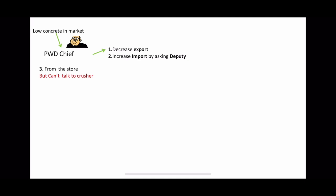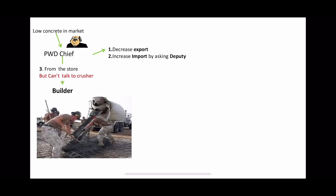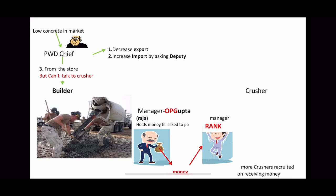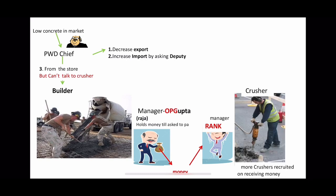The chief tells the builder to take down part of the road so that concrete can be released. The builder tells his manager, Mr. Opie Gupta, who manages the finance. Opie Gupta holds the money until it is necessary and he gets an order. He then gives money to the manager of the crusher — the poor one, called 'rank' in Hindi. As he gets the money, he recruits more crushers and the crushing process starts. This mobilizes not just the concrete but also the rods and cement mixture. The chief cannot talk directly to the crusher — he must go through the builder, Opie Gupta, and rank. Mr. Tony here sends excess concrete to the market and keeps the crusher silent.